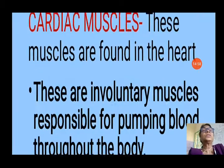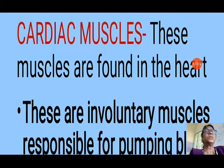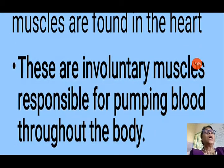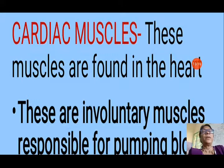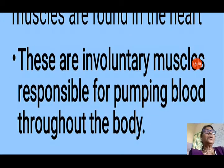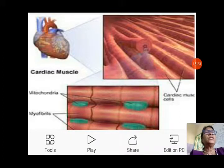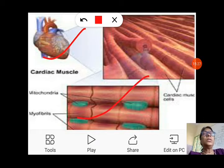Next is cardiac muscle. These muscles are found in the heart and are involuntary muscles responsible for pumping the blood. They are involuntary in their action, but they are a special type of cell present only in the heart, which is why they are known as cardiac muscles. Our heart pumps blood all over the body using these very special cardiac muscles.